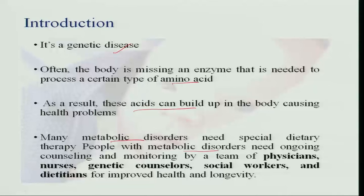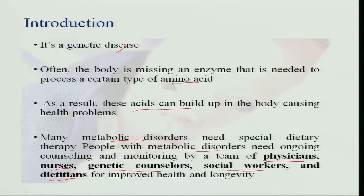People with metabolic disorders have to be monitored by counseling and they have to be supported by a team of physicians, nurses, genetic counselors, social workers, and dietitians so that they can improve and manage their health for longevity in life. The disorders of metabolism include phenylketonuria (PKU), maple syrup urine disease (MSUD), galactosemia, and endocrine disorders especially hypothyroidism and hyperthyroidism.